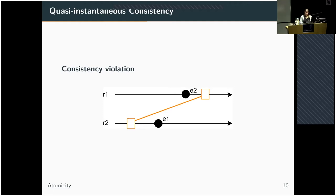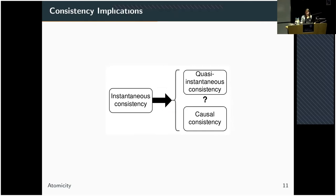These are our consistency definitions, and they are connected to each other. One unsurprising thing is that instantaneous consistency implies both quasi-instantaneous consistency as well as causal consistency. This is because if we freeze the system and take the memory snapshot — copying every region at the same time — then the point in time at which an instantaneous snapshot would have produced the same result is exactly that point in time. And if we have this vertical line, there can also be no errors from the future into the past.